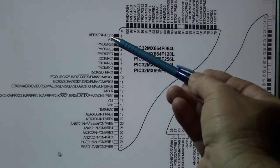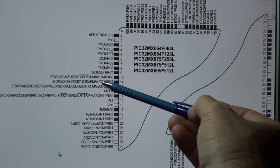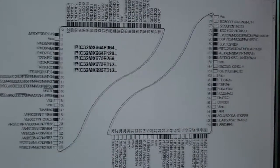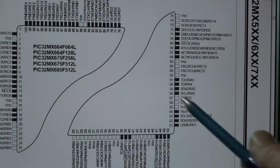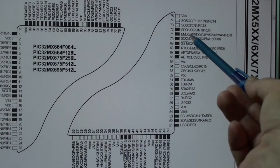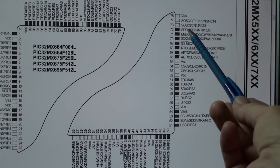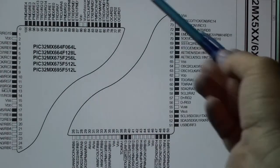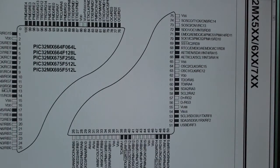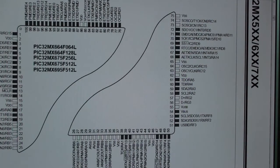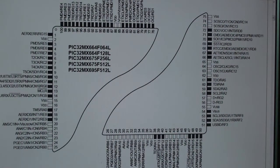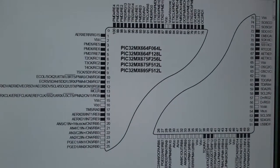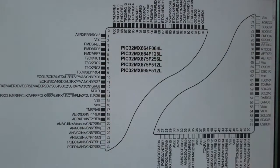You can see RB3 is CN5, CN4, CN3, CN2. On the other side there are CN8, CN9, CN10 - I believe there are 21 Change Notice pins you can select. CN1 is on RC13. Have a look at the datasheet and find the relevant CN pins. On the old PIC16s it was called Interrupt on Change, but now it's called Change Notice, so look for 'CN' for Change Notice.